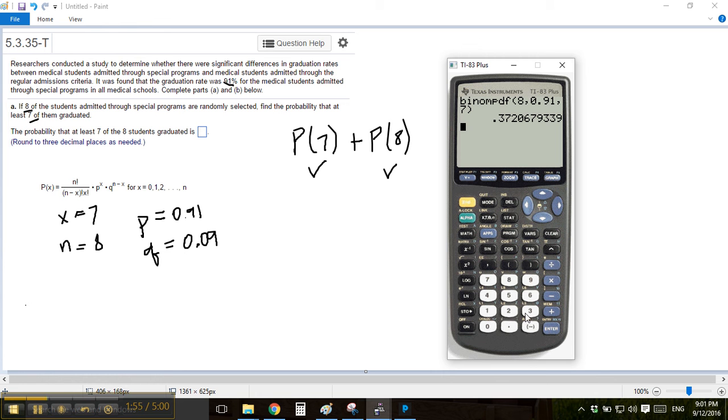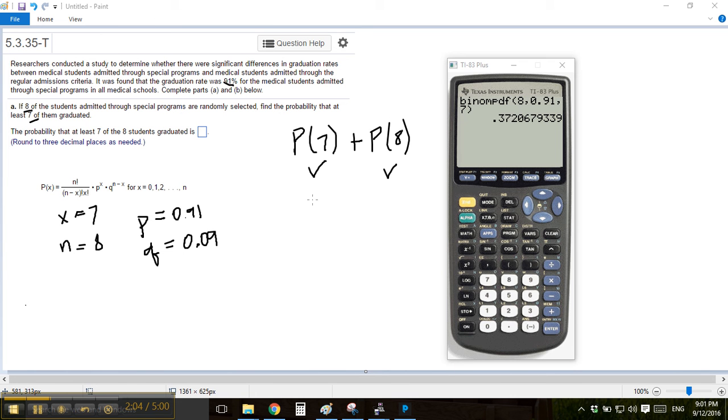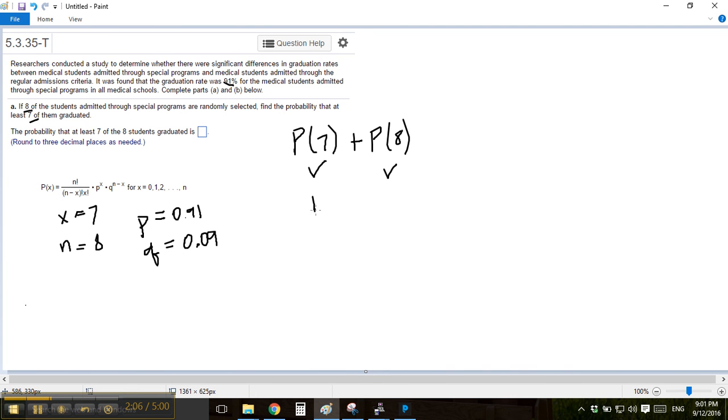That's the same number you'll get if you do this big long calculation and use these numbers here. They're saying that this will be equal to that number. So this right here will be 0.372.